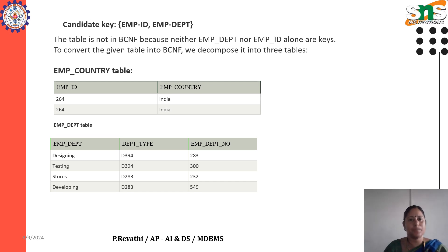What is a functional dependency? A functional dependency in DBMS is a fundamental concept that describes the relationship between attributes in a table. It shows how the values in one or more attributes determine the value in another.